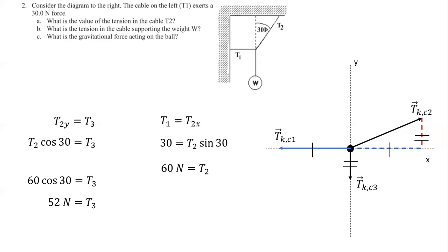Part C wants to know what is the gravitational force acting on the ball. The force diagram for the ball would only have two forces: a tension upward, which happens to be tension 3, and a weight downward that have to be balanced. We just found tension 3 is 52 newtons. Therefore, the gravitational force, the weight, must also be 52 newtons.